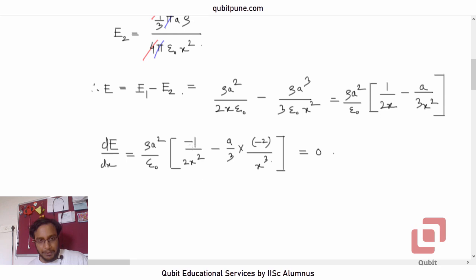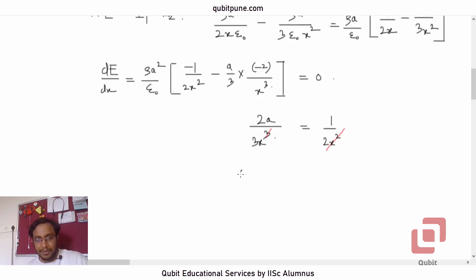If we equate this to 0, let us send negative 1 upon 2x squared to the other side. On LHS, we will have 2 into A, so negative 2A upon 3x cubed equals 1 upon 2x squared. Cancel x squared with x cubed, so there will only be x there. What will 3x equal? 3x equal to 4A.